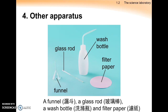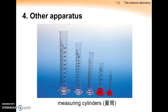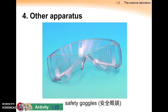Furthermore, a filter funnel and filter paper work together to make a filtration setup. A glass rod can be used for mixing different mixtures, and a wash bottle can be used to contain water for washing purposes. For measurement, we can use different volumes of measuring cylinders.